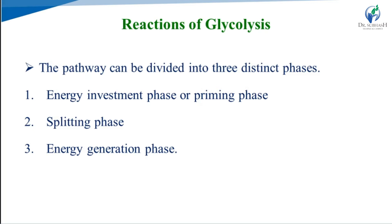The reactions of glycolysis can be divided into three distinct phases. First, the energy investment phase. Second, the splitting phase. Third, the energy generation phase. In the first phase, ATP is utilized, and in the third phase, ATP is generated.